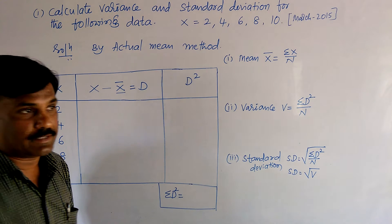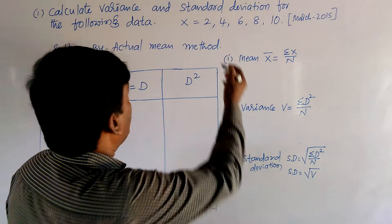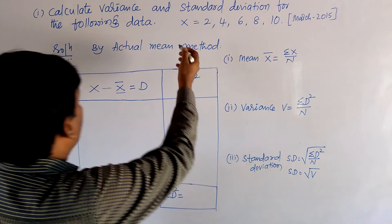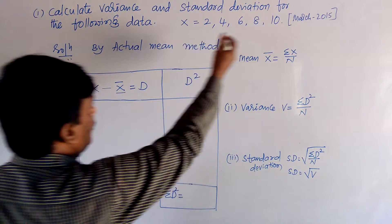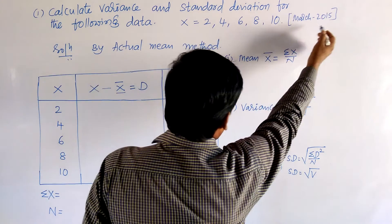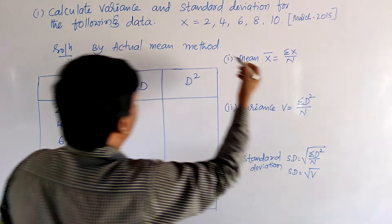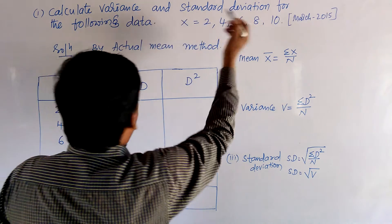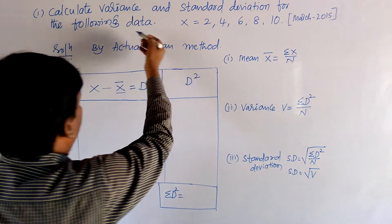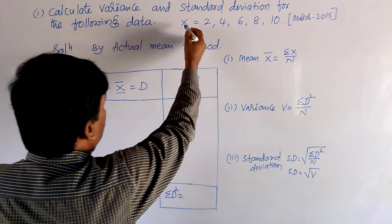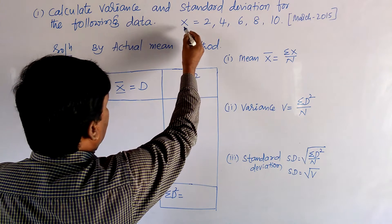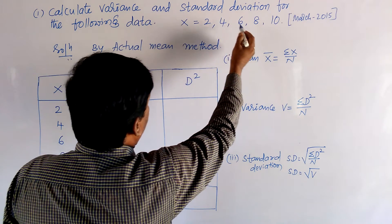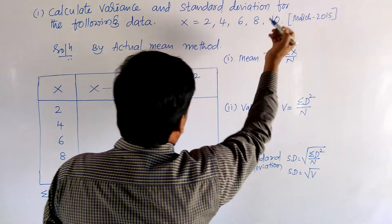This is specially ungrouped data. One problem is given in March 2015: calculate variance and standard deviation for the following data, that is scores x equal to 2, 4, 6, 8, 10.